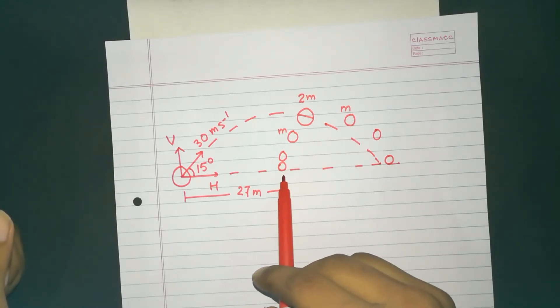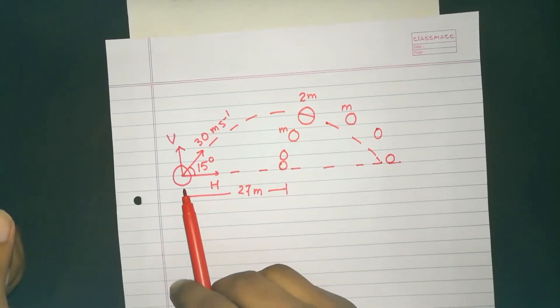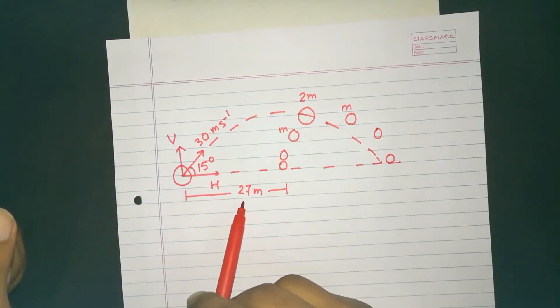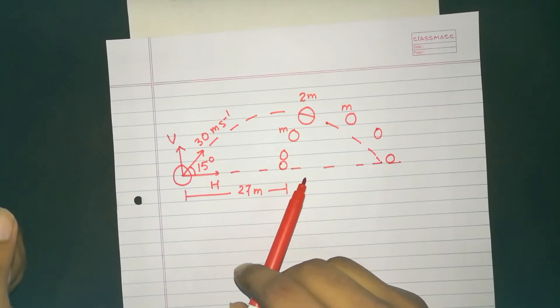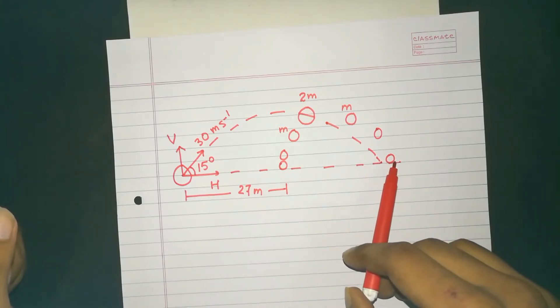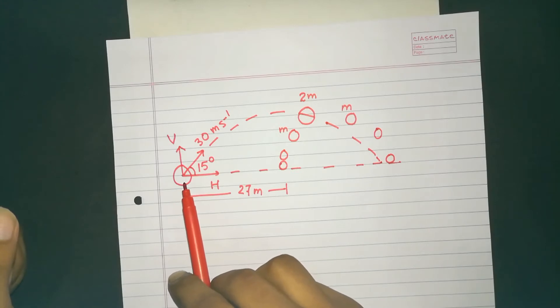So now in the question, the position of one of the parts with respect to the starting point is given. That is 27 meters from the starting point. And it has been asked to find the position of the other mass from the starting point.